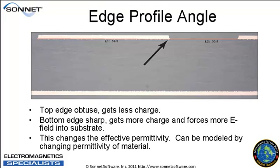There are also some other effects we can roll into the permittivity tensor. For example, the edge profile: as the conductor edge gets sharper, charge is more likely to concentrate there, and we can model that as a change in permittivity because it changes the field distributions.